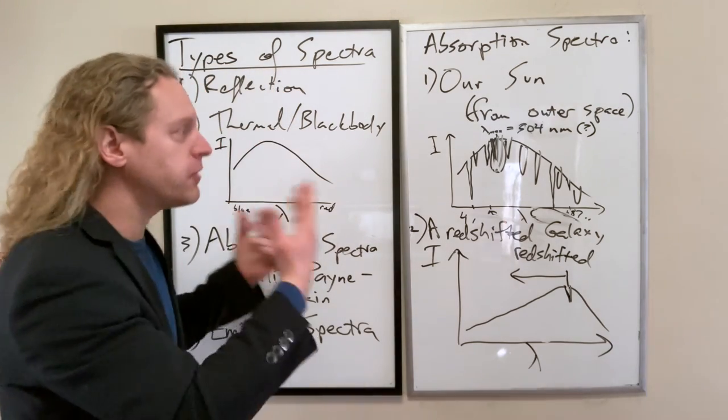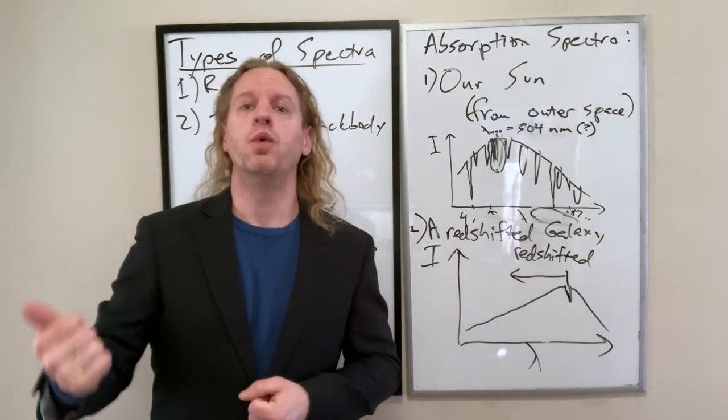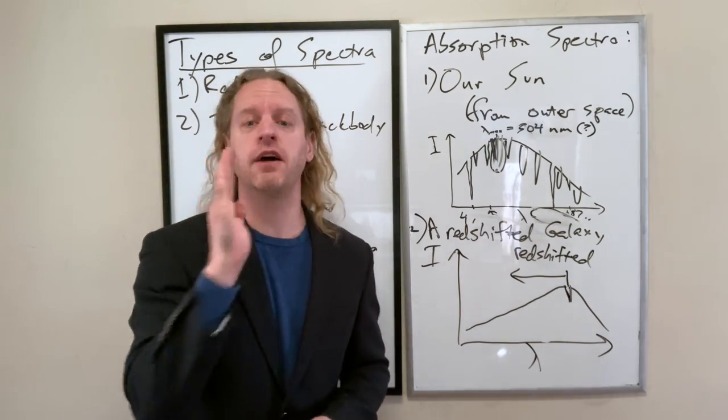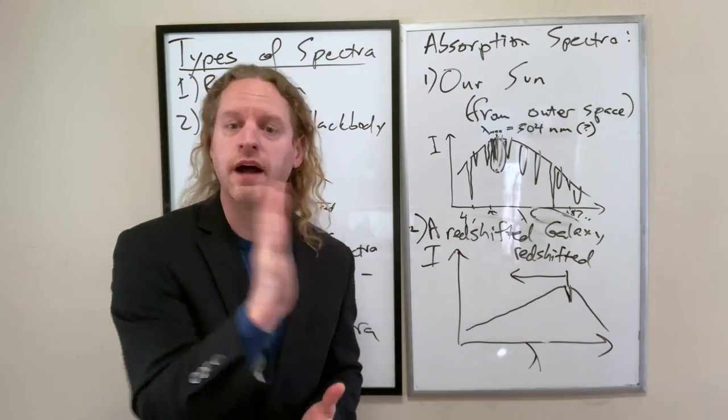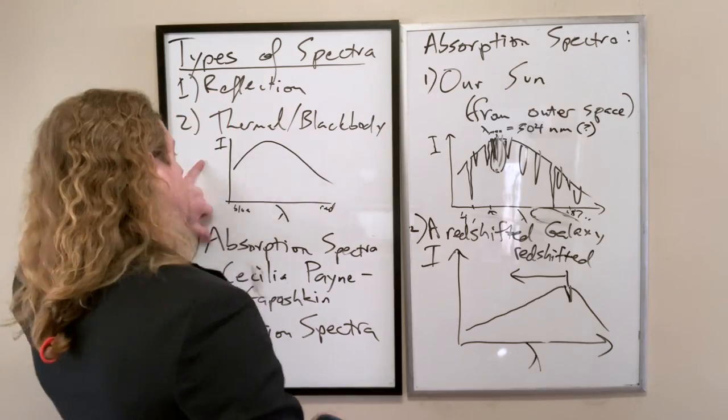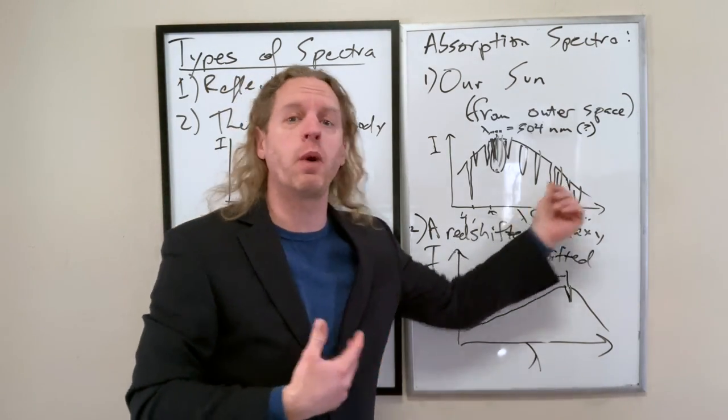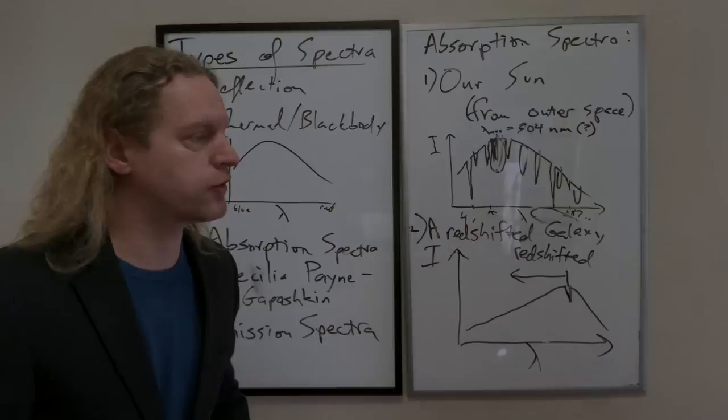Okay, so simply speaking, again, all an absorption spectrum is is a continuous spectrum with a very specific set of wavelengths that we're not seeing as many as we should be. When we get into emission spectra, that's when we can give the reasoning for why we see these gaps here. I'm going to take a quick pause.